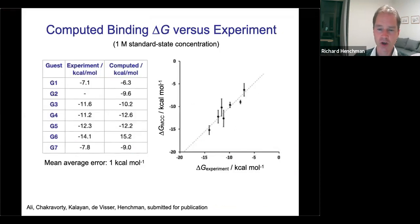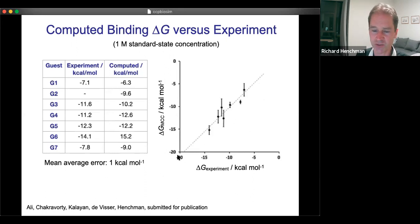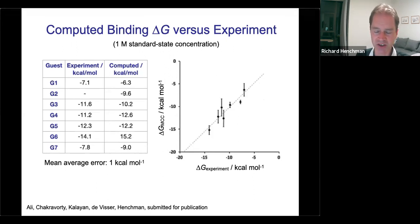We did reasonably well overall. These are the seven guests with experimental values alongside our computed values, run in triplicate to give standard deviations. The mean average error is about 1 kcal/mol, which is respectable and pretty reasonable for this kind of method. There are some limitations, primarily with the solvent being a difficult term, but it's pretty good. The most helpful aspect isn't just the Gibbs free energy value but all the understanding we gain from the entropy contributions to binding.